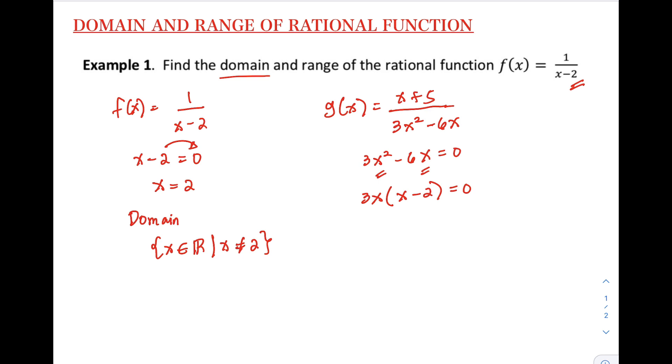Then equate both factors to 0. We have 3x equals 0 and x minus 2 equals 0. So in this case, we have 2 values of x. For the first one, divide by 3, we have x equals 0. Then the second one, we have x equals 2. So therefore, the domain of our g of x is the set of all real numbers such that x is not equal to 0 and 2.